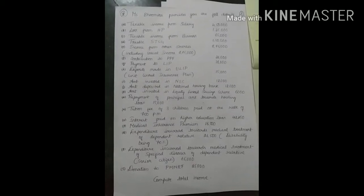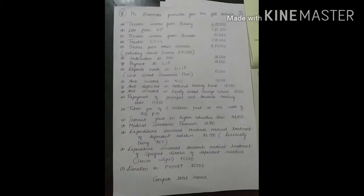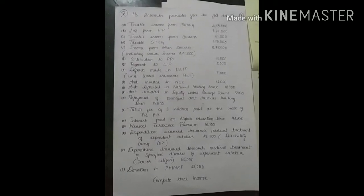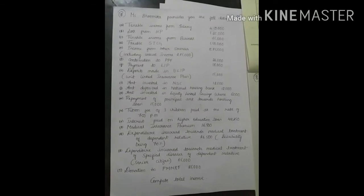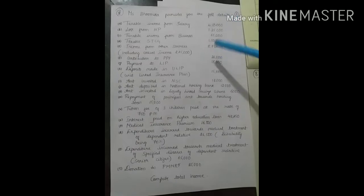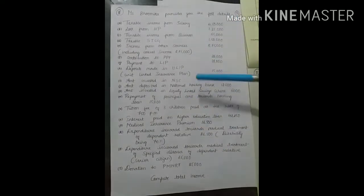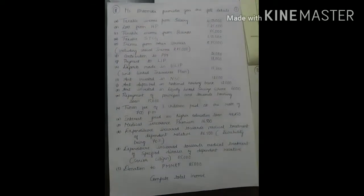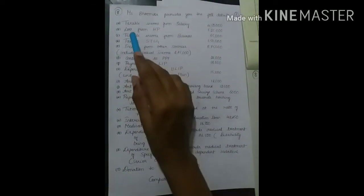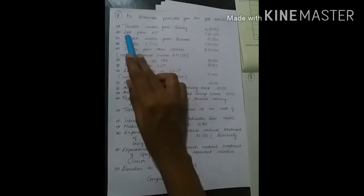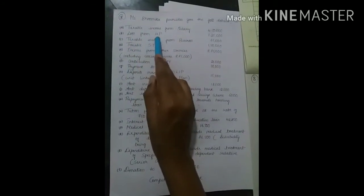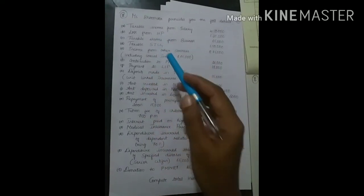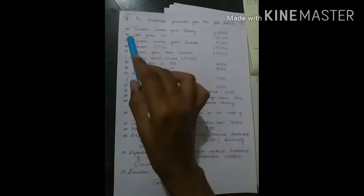This is the continuation problem of the chapter deductions from GTI. Let's analyze this problem now, the eighth problem. Take down the eighth problem. Miss Bhumika provides you the following details, a bit big problem. Various items have been given here: taxable income from salary four lakh fifty thousand, and there is no income from house property. Instead, a loss from house property is given. It is nothing more complicated. The income and the loss will deduct. Put it in the brackets and we will show this amount.